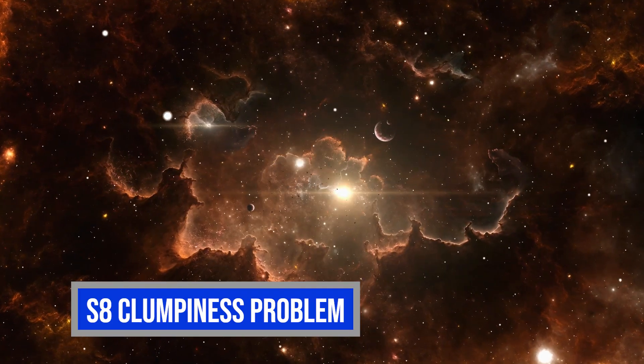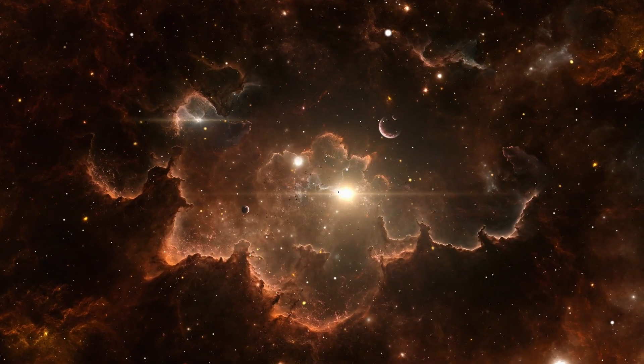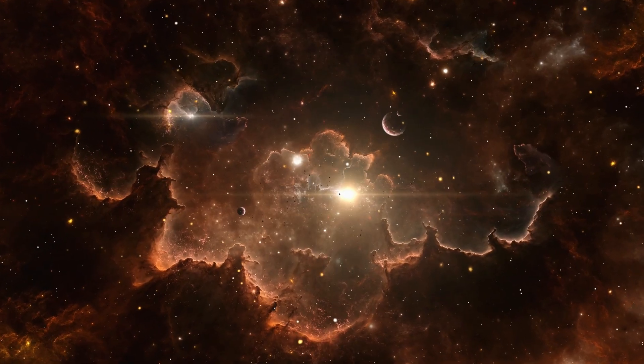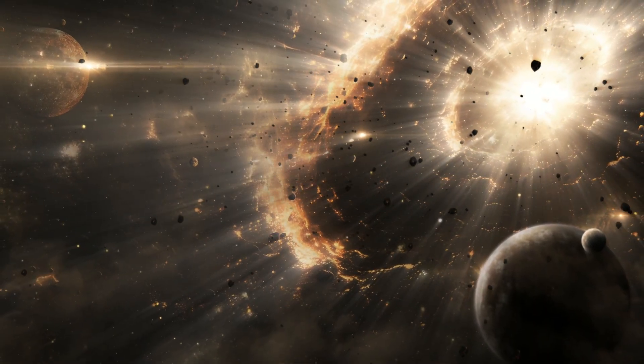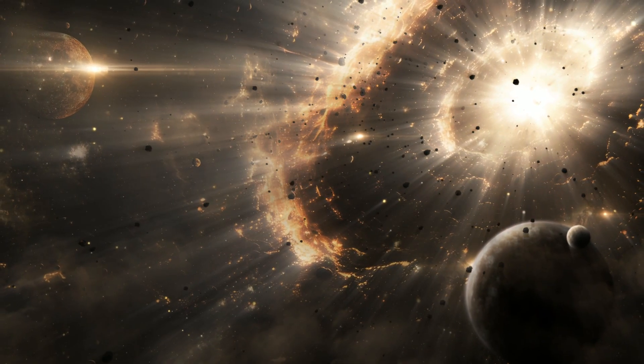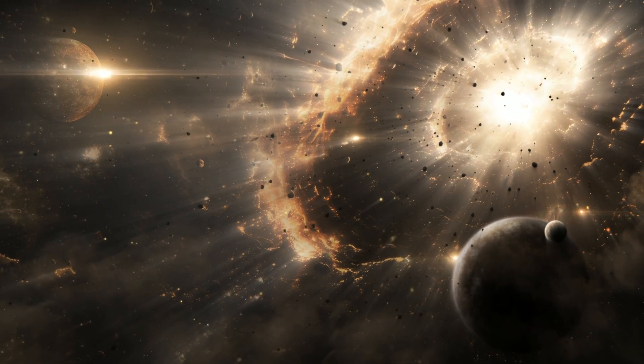Then there's the S8 clumpiness problem. The universe is less clumpy than it should be if gravity and dark matter worked the way we thought. Webb's view shows smoothness where chaos should reign. These aren't just small measurement errors. They're consistent across the board.